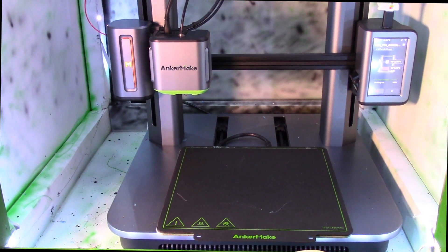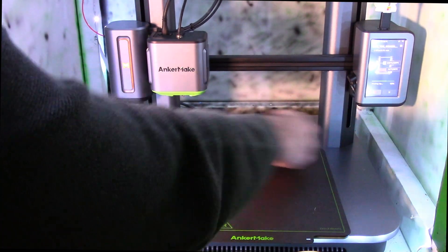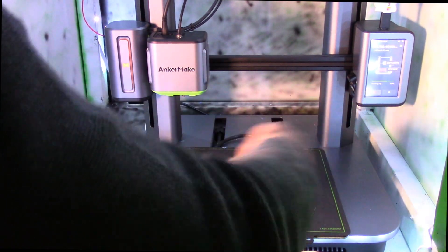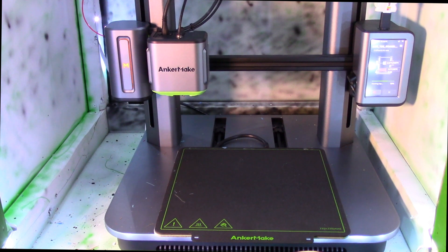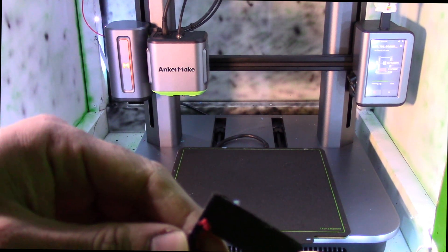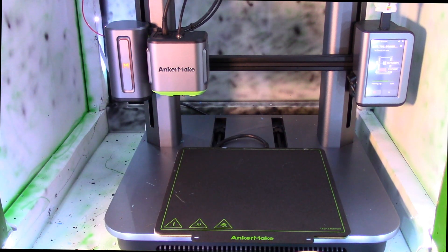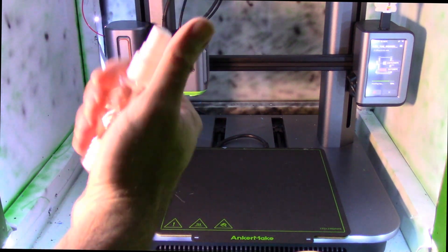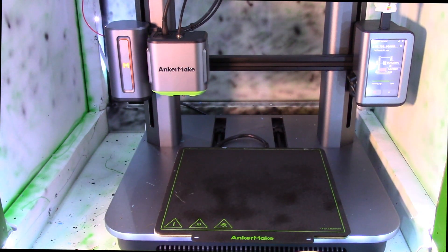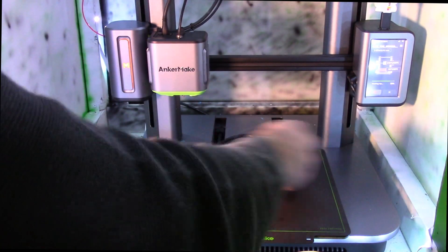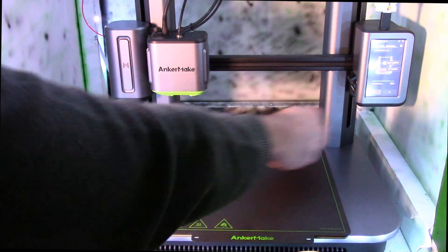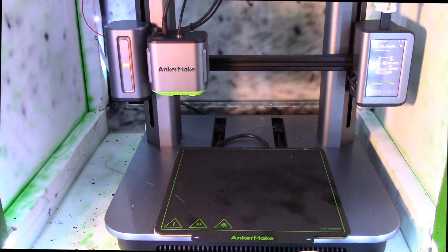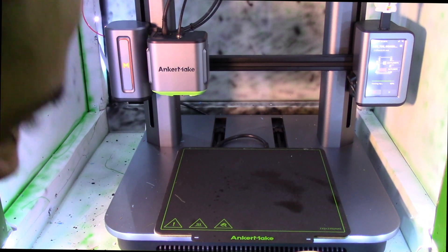What I do to the build plate is I always scrape it clean from the previous print, like so. Now I print a bunch of these shovels because they melt pretty quick. These shovels are available on the AnkerMake built-in files. Then I always spray with isopropyl alcohol, give it another scraping like so, and I give it one more spray.